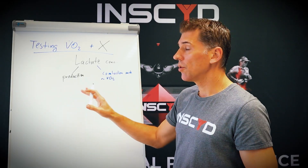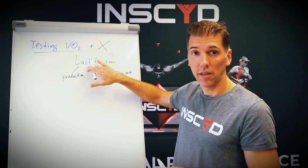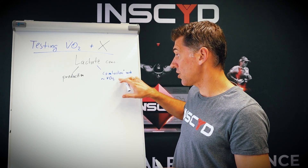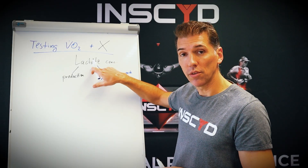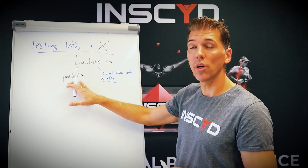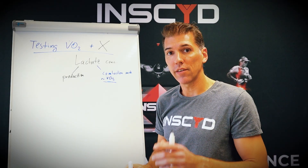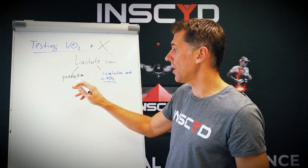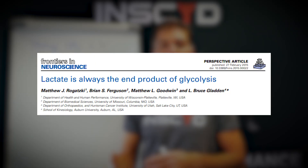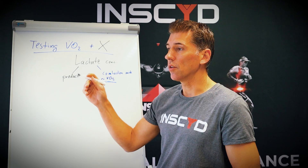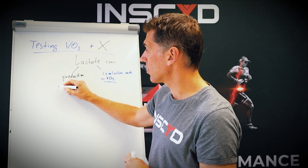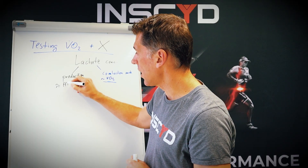Now you might ask: what about production? I don't know the production. That's correct. But think about lactate in terms of a mathematical equation: lactate concentration is the result of production minus combustion. So when we measure combustion by measuring VO2, and we now measure concentration, we can solve for production. We have three metrics, two are now known, which means the third we can very precisely calculate. And that reveals and unlocks so many important metrics. Because lactate is always the end product of glycolysis — there's a great body of scientific literature which proves that.